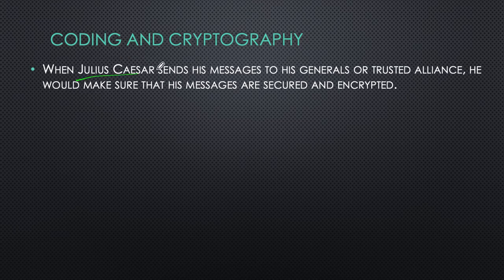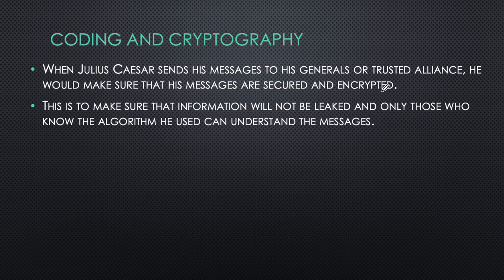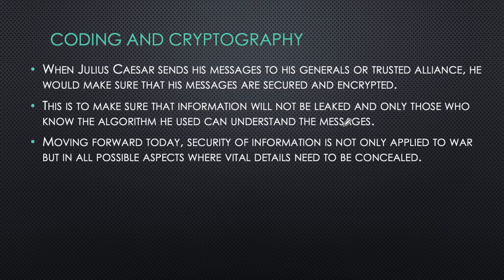Remember when Julius Caesar sent his messages to his generals or any trusted alliance — he would make sure that the messages were secured and fully encrypted. This was to make sure that the information would not be leaked, and only those who knew the algorithm — that is, the pattern of how to encode or decrypt the messages — could understand them.